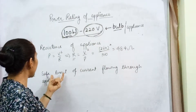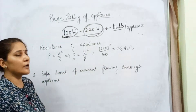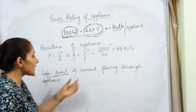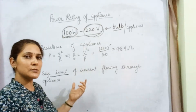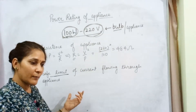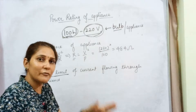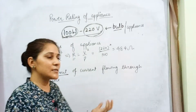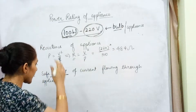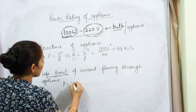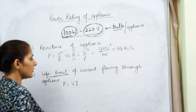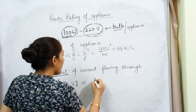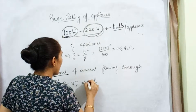Second, as I told you, we can find out the safe limit of the current flowing through the appliance. Safe limit of current — what is the meaning of this? It means how much current safely flows through the appliance. If more than this amount flows, it can damage the appliance. That's why we call it the safe limit of current. The formula is P = V × I, so current I = P upon V.